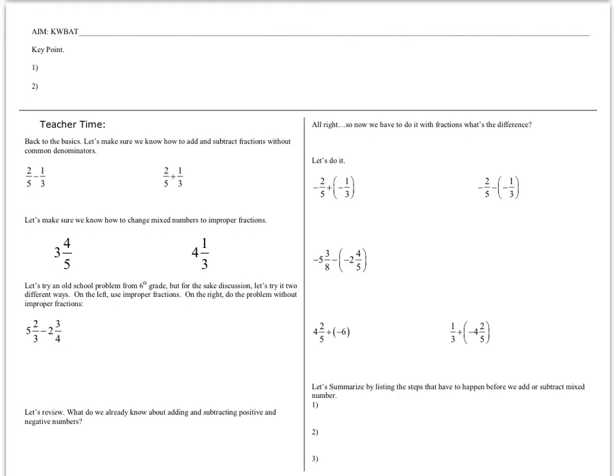Today we're going to add and subtract positive and negative fractions and mixed numbers. We're basically taking things you already know how to do — add and subtract fractions and mixed numbers — and adding the piece where we're dealing with negative numbers. Before today, the only time you added and subtracted negative numbers was with integers. This is going to get more complex, which is why I've been stressing perfect practice and focus on the details.